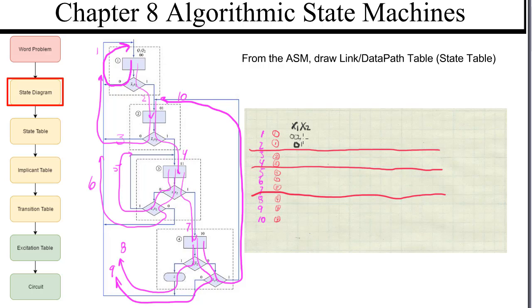All others are going to be link path one: zero-zero, one-zero, and one-one. Link path three is going to be zero-zero, one-zero, one-one. And link path four is going to be zero-one.